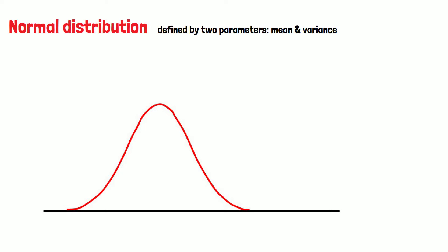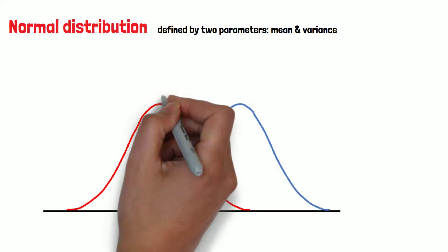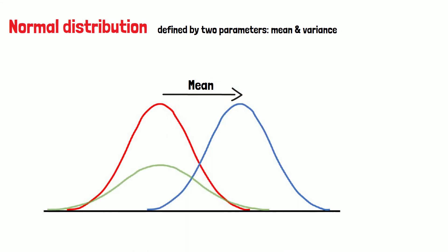If the mean is different from 0, the whole curve is shifted accordingly along the x-axis. If the variance is larger, the curve becomes flatter and wider.